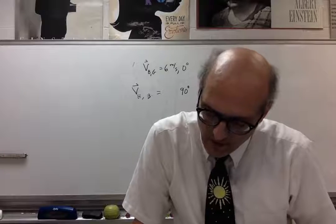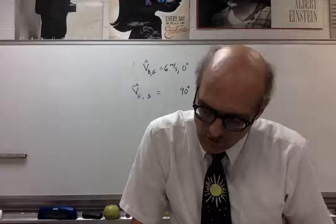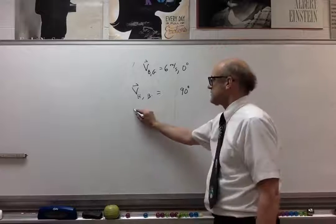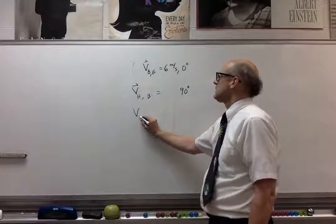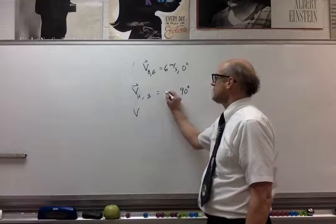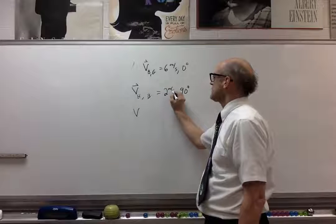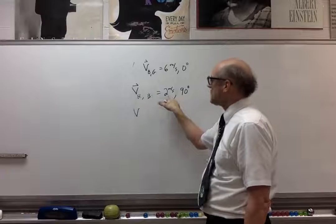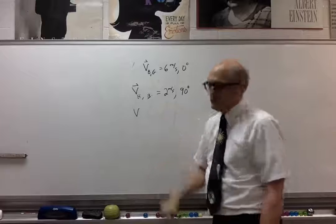The speed of the hawk relative to you is 2 meters per second. That's 2 meters per second because that's the speed of the hawk relative to you, and you're on the balloon.